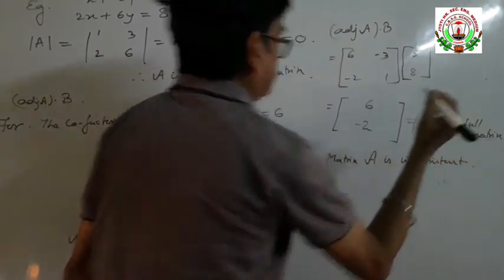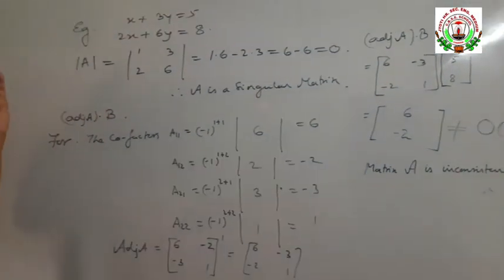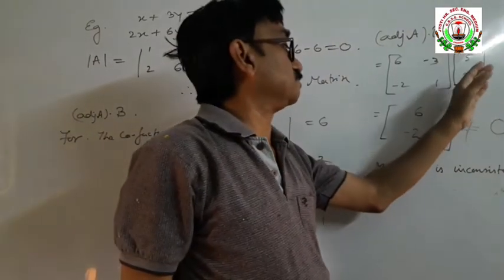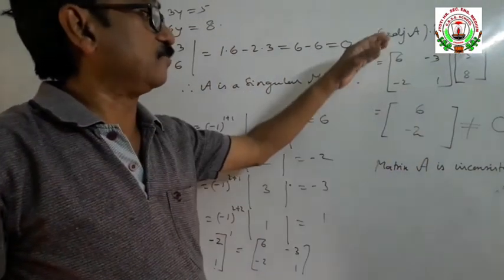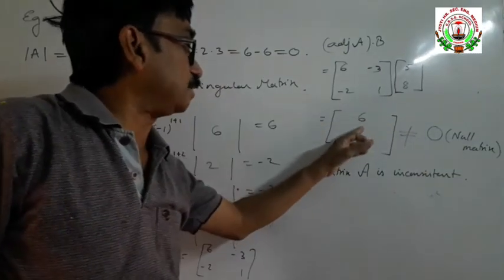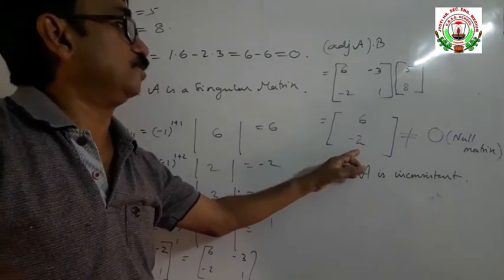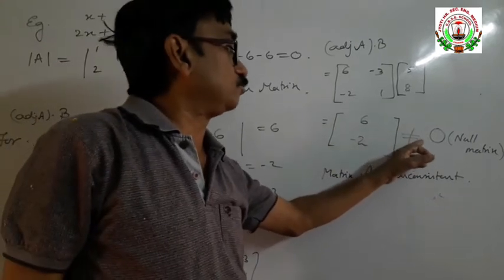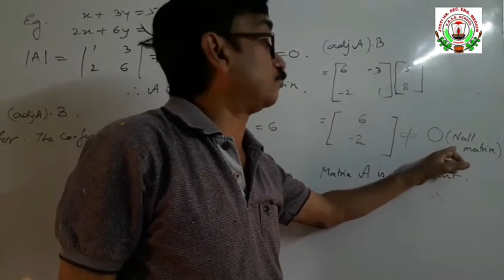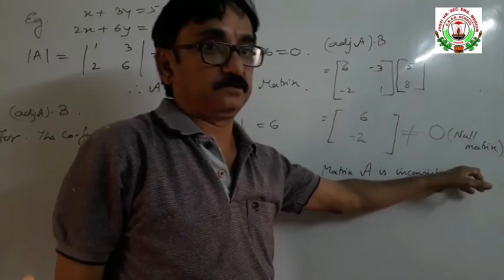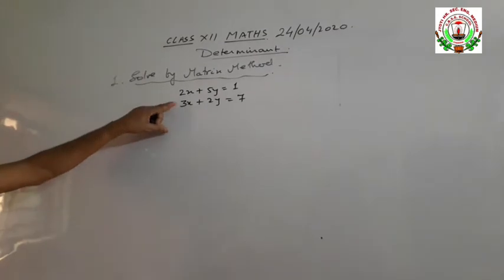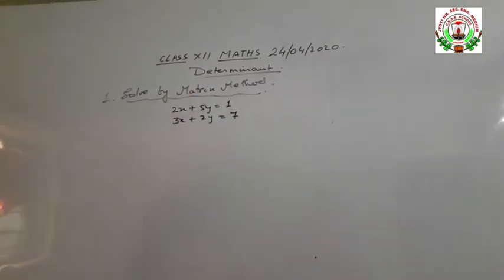When we find adjoint of A into B, the result being a null matrix means that all the elements must be equal to 0. In this case it is not equal to a null matrix, so the system is inconsistent. Now, we will solve a linear equation in two variables by the matrix method.